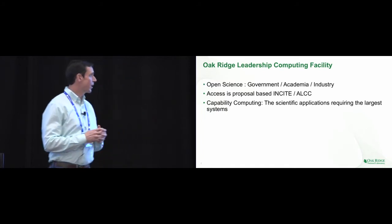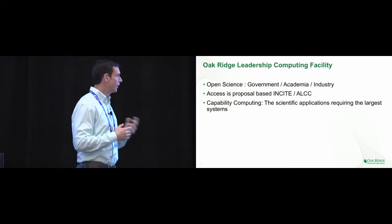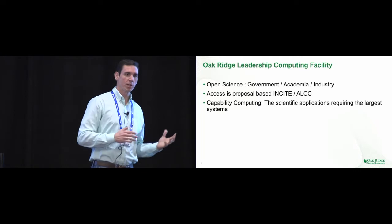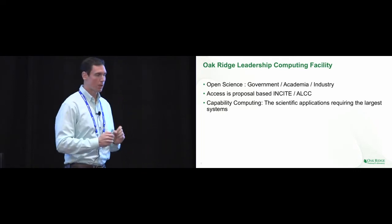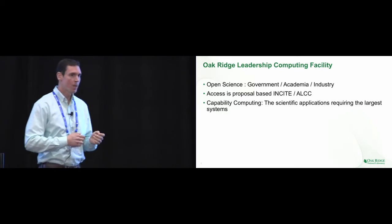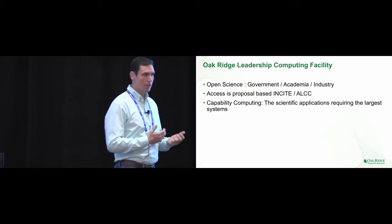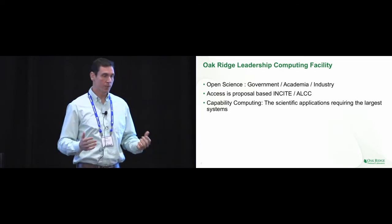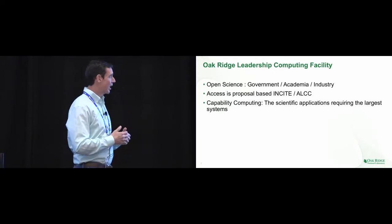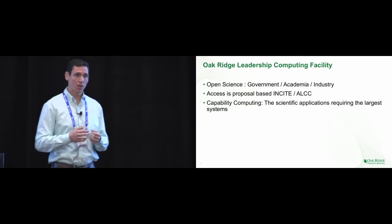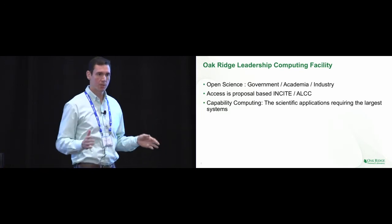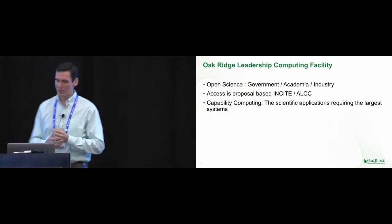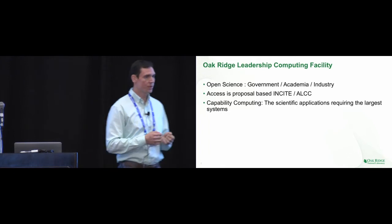We're a capability computing center — we target the largest science applications possible that you can't run anywhere else. From a scheduling perspective, we will prioritize jobs that run over 20% of the machine. On Titan, those are jobs of 4,000 nodes or greater. This contrasts with other DOE centers like NERSC, which are capacity centers trying to optimize for the number of jobs moving through overall. As part of the proposal process, you also have to demonstrate that your applications can actually scale.